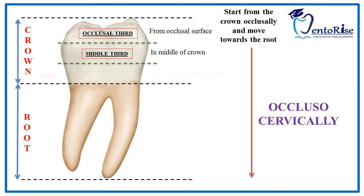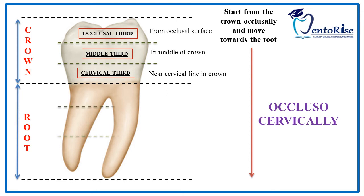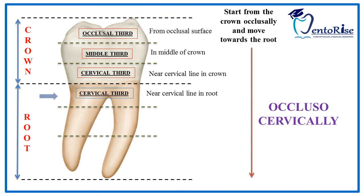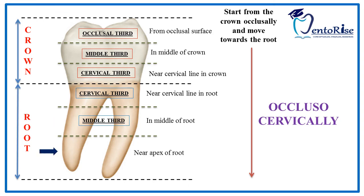On dividing the root into three equal parts as shown in the figure, the one third near the cervical line is called the cervical third, the one third in the middle of the root is called the middle third, and the one third near the apex of the root is called the apical third.